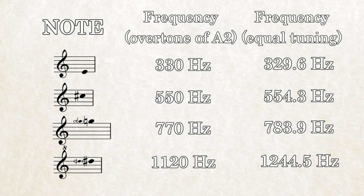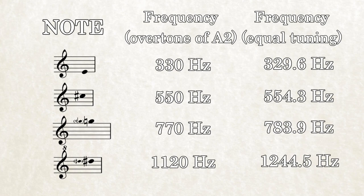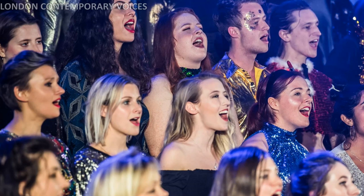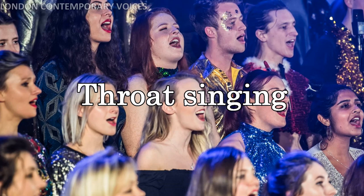Singers train themselves to control the prominence of the overtones in their voice. In fact, certain styles of singing, like throat singing, are entirely based on this manipulation of sound. By shaping the resonating chamber that the mouth creates, you can bring out specific overtones.